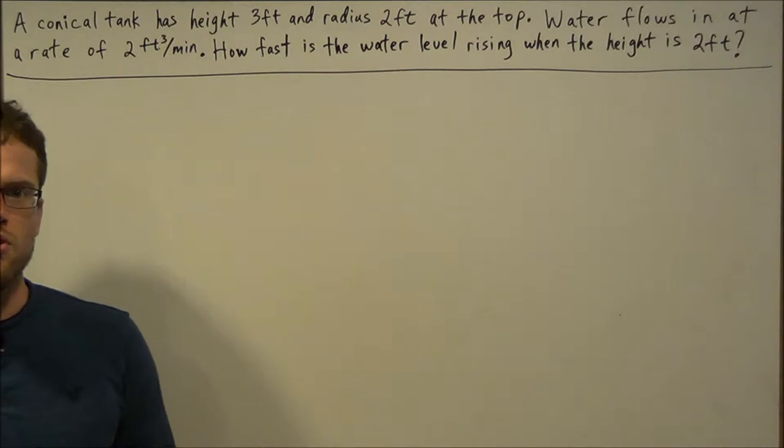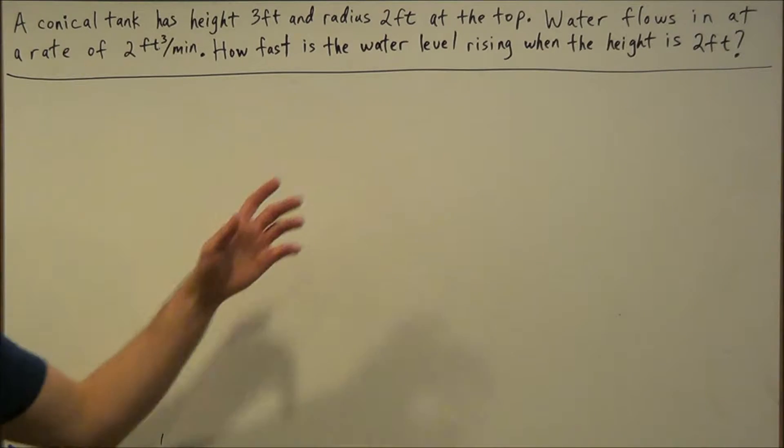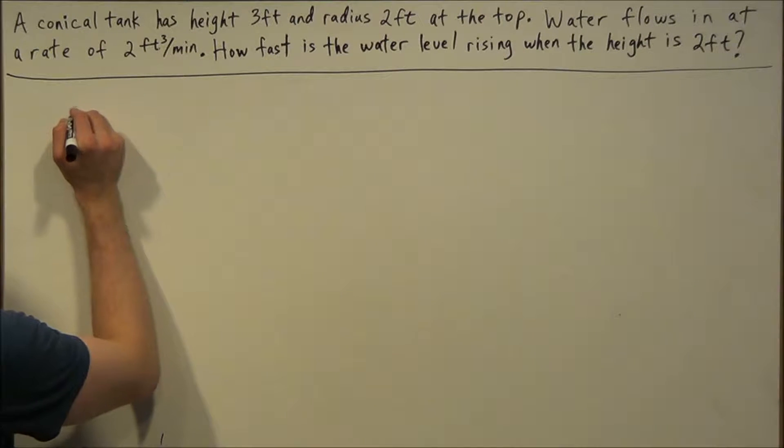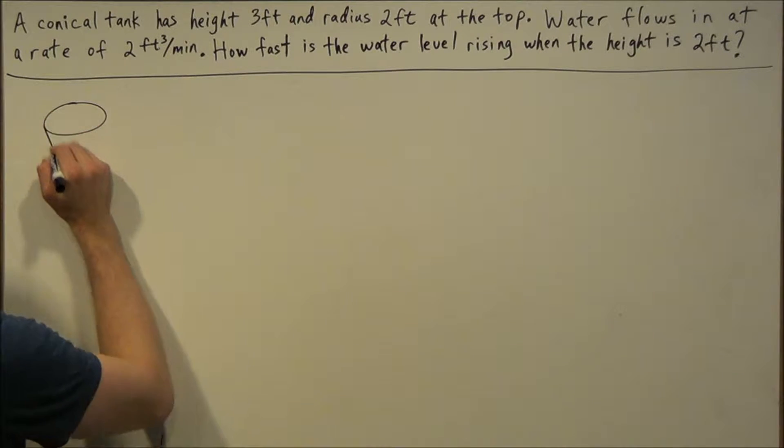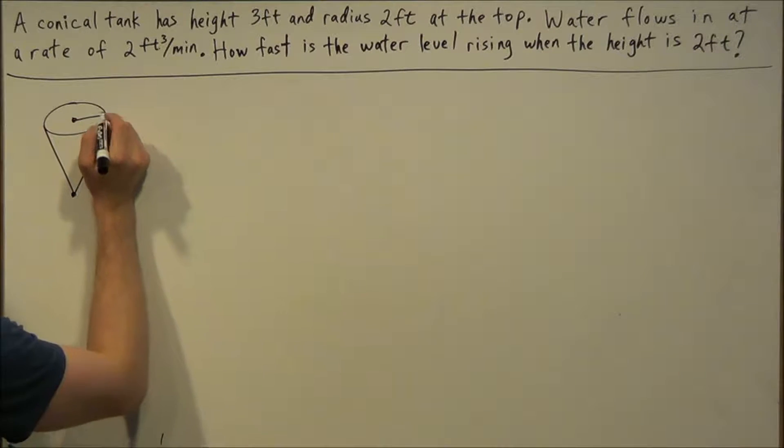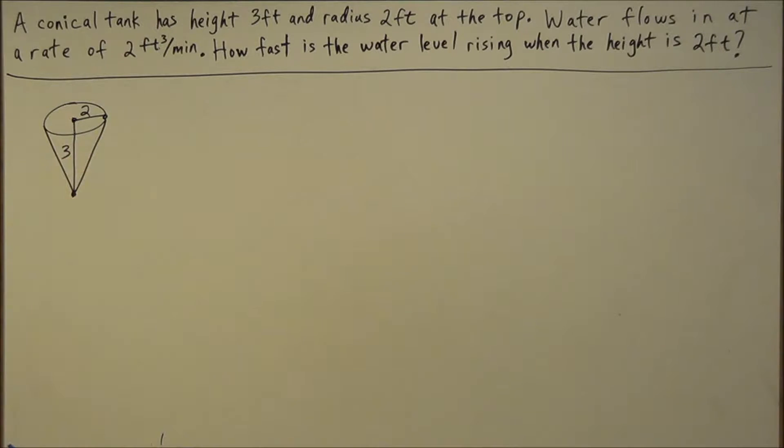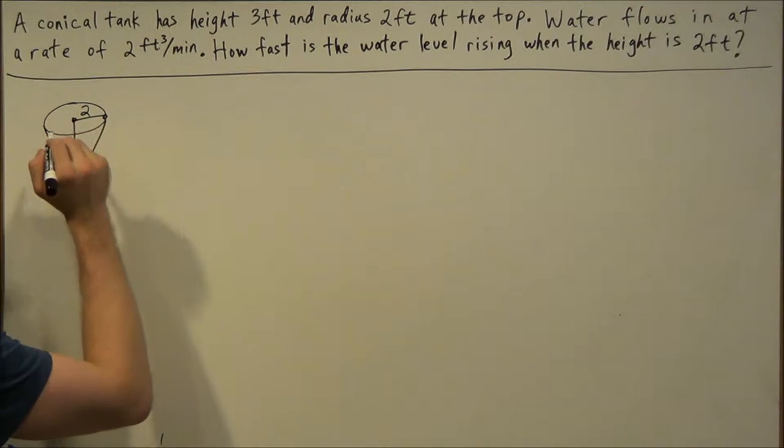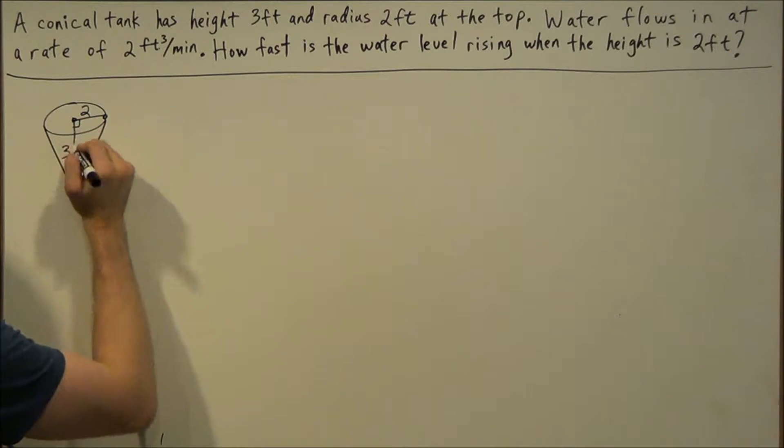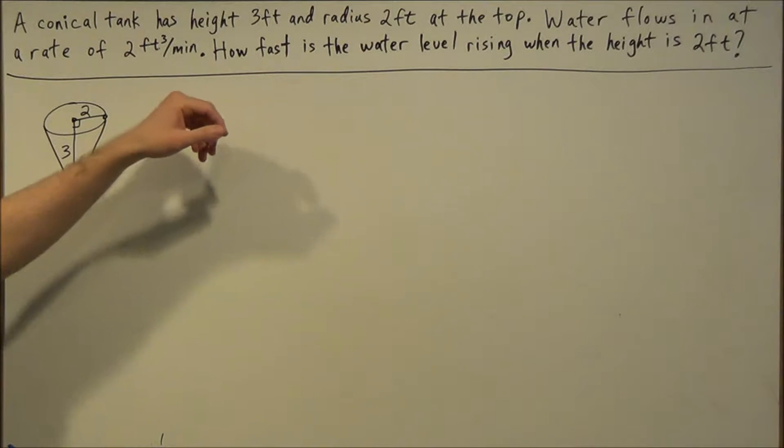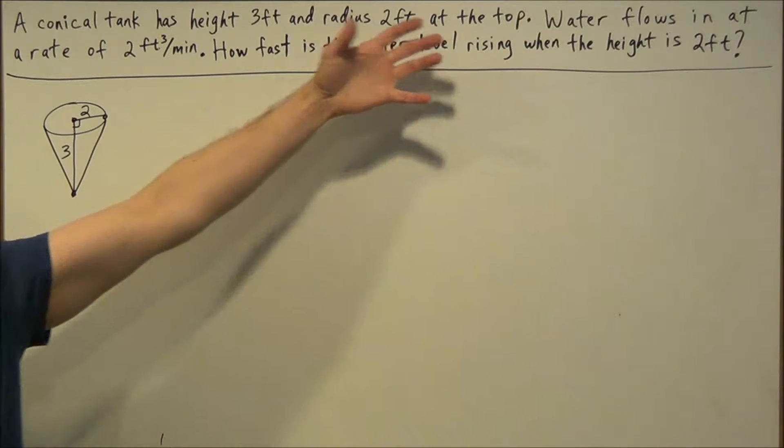For this problem and pretty much all related rates problems, the first thing we want to do is draw a diagram and collect as much data as we can. We start off with a tank in the shape of a cone, and we know that the radius of the cone at the top is 2 feet and the height of the cone is 3 feet. One important concept here is that a cross-section of a cone makes a right triangle, which is going to come into play later. Next, we want to translate and extract data.